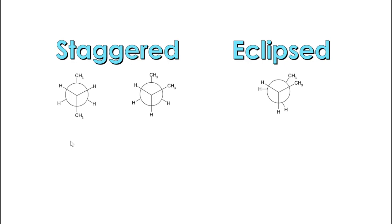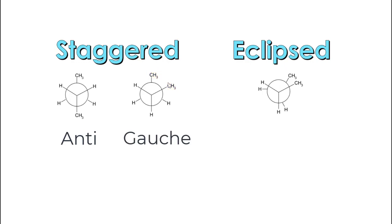When you're looking at a staggered Newman projection, if you have two groups that are opposite each other — so 180 degrees apart — that is known as anti. And if you have two groups that are adjacent to each other, that is called gauche. It's important to note that the terms anti and gauche only apply to staggered Newman projections; they don't apply to eclipsed conformations.